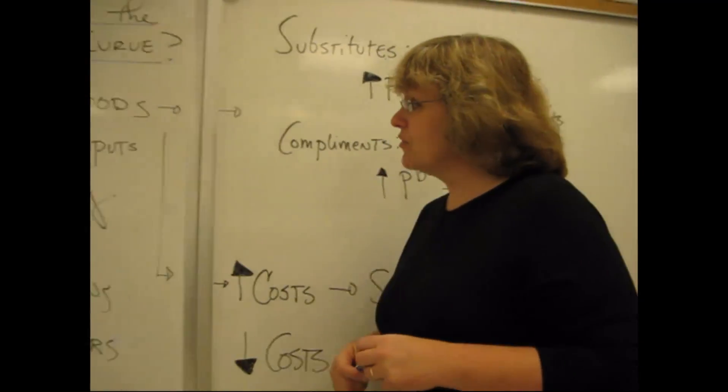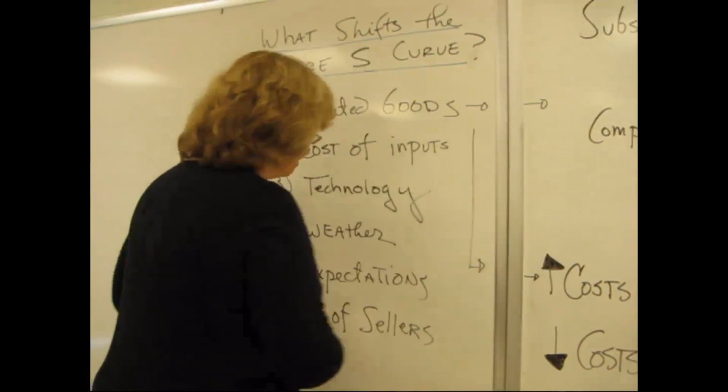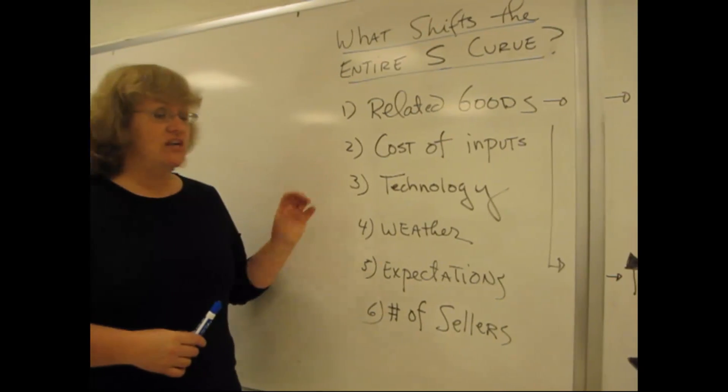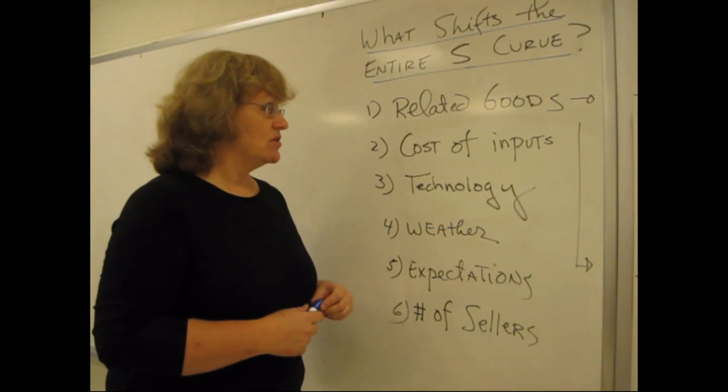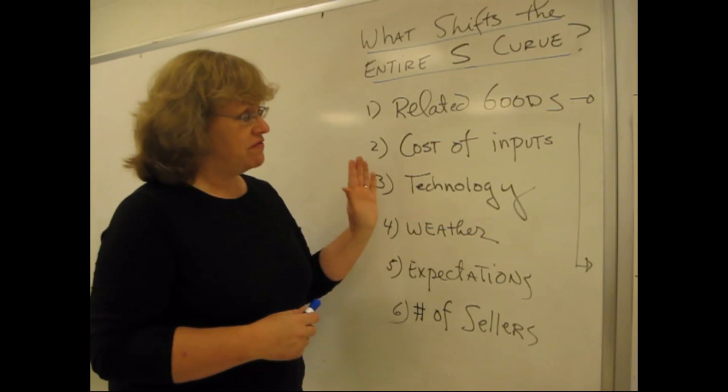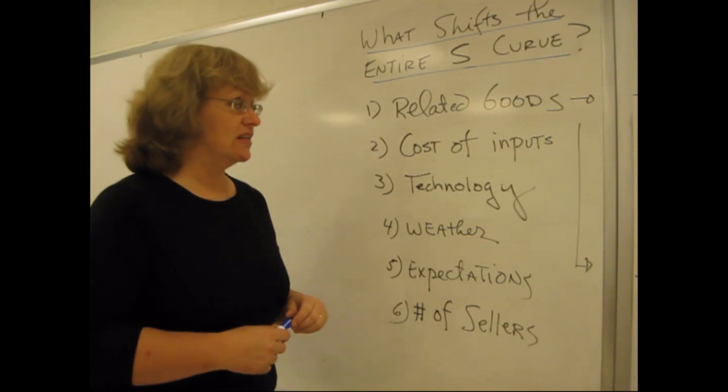Okay, the third one, technology. A change in technology will change the price for every amount that a producer is able to produce, and so it's going to shift the entire curve to the right or to the left.